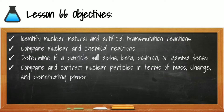Hi class, welcome to lesson 66. In this lesson you'll be able to identify nuclear reactions as being artificial or natural, compare nuclear reactions with chemical reactions, determine if a particle will undergo alpha, beta, positron, or gamma decay, and compare and contrast nuclear particles in terms of mass, charge, energy, and penetrating power. Make sure you have a Regents Chemistry reference table with you and take notes as you follow along.